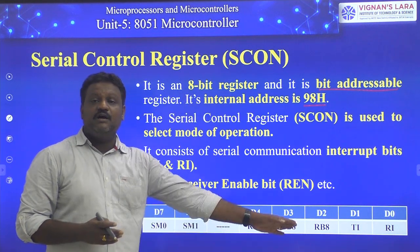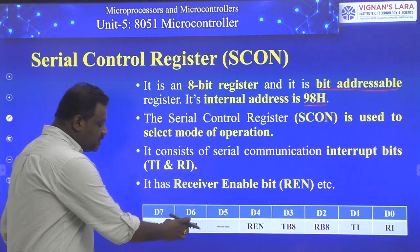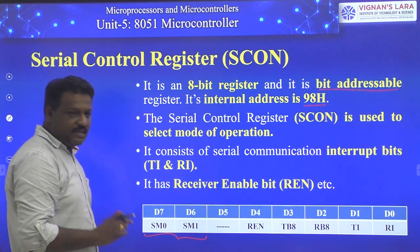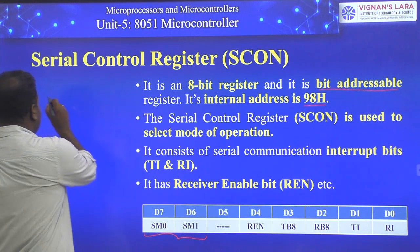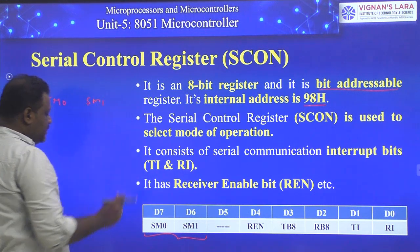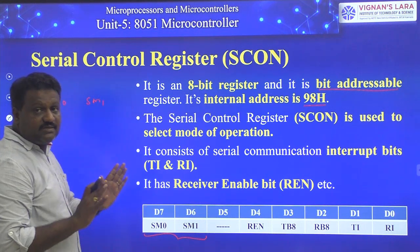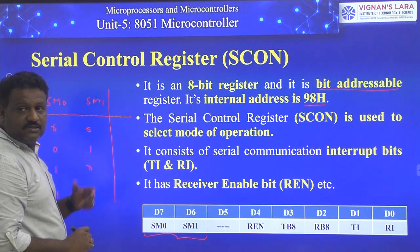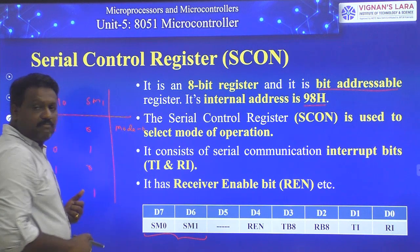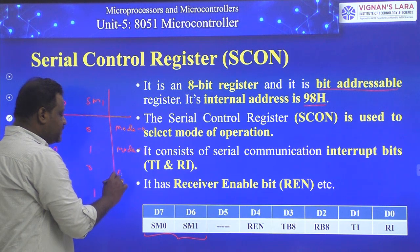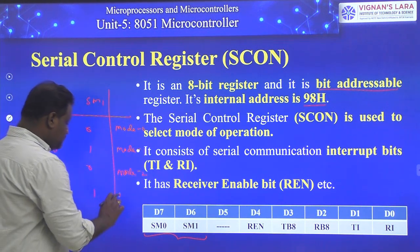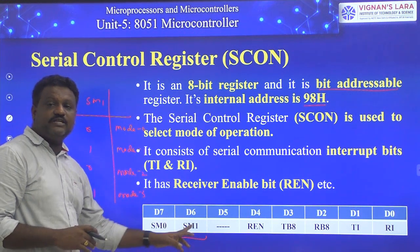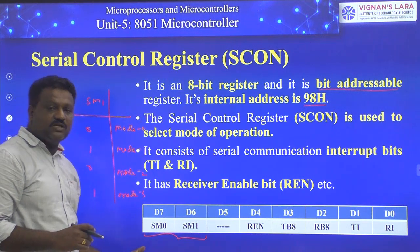In the SCON register, SM0 and SM1 are the serial mode selection bits. With two bits we get four combinations: 00 is Mode 0, 01 is Mode 1, 10 is Mode 2, and 11 is Mode 3. SM0 is at the most significant bit position. These mode selection bits, located at the MSB side of the SCON register, allow us to select one of four modes of operation.